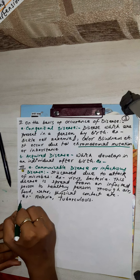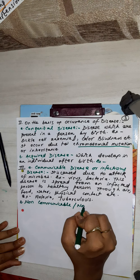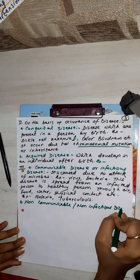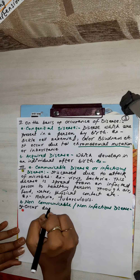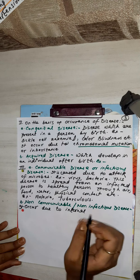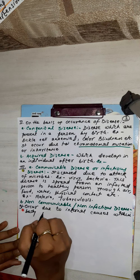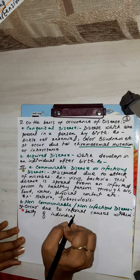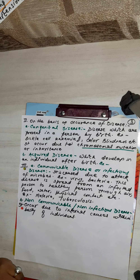Non-infectious or non-communicable disease — it occurs due to internal causes within the body of the individual. For example, hormonal problems and diabetes, where insulin is not secreted, and respiratory problems.